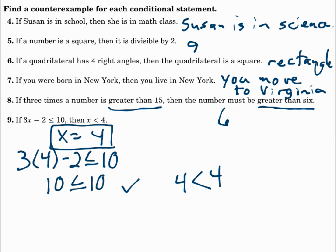Remember: for a counterexample, it has to be true for the hypothesis but false for the conclusion, and you only need one counterexample to prove a conditional statement false. When looking for a valid conclusion, the given condition must satisfy the hypothesis. And for identifying hypothesis and conclusion, the hypothesis comes after 'if,' and the conclusion comes after 'then.'